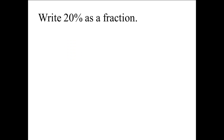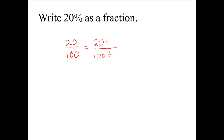Write 20 percent as a fraction. We will write 20 over 100. We can see that there is a common factor of 10 in the numerator and denominator because the ones place is a 0. But also 20 and 100 are divisible by 20, so the greatest common factor is 20. We divide numerator and denominator by 20: 20 divided by 20 is 1, and 100 divided by 20 is 5. So 20 percent as a simplified fraction is 1 over 5.